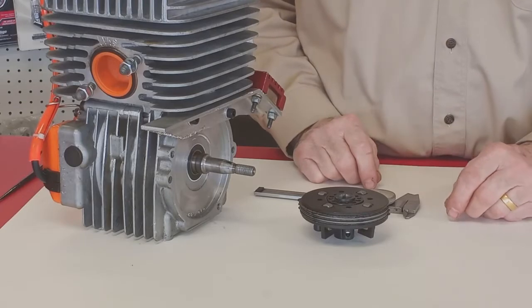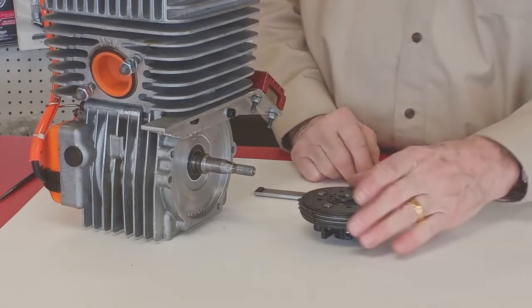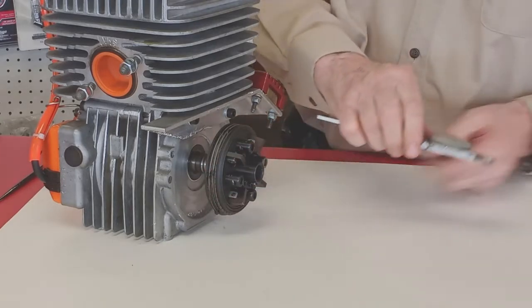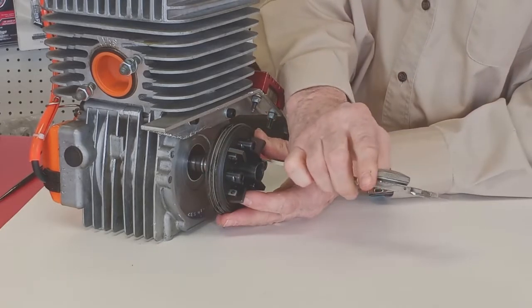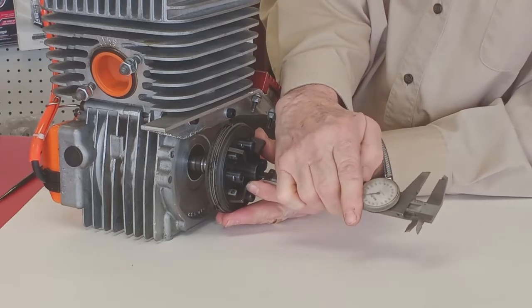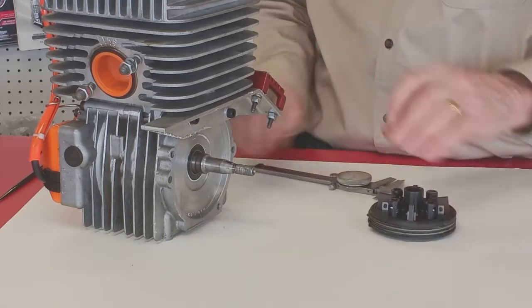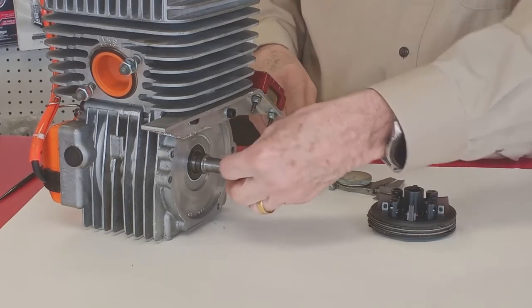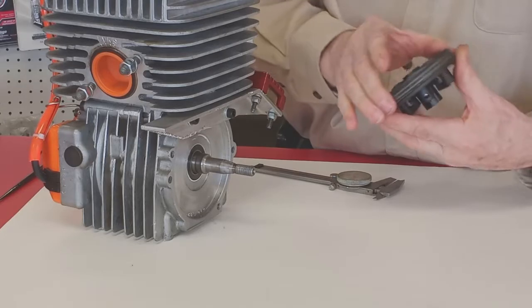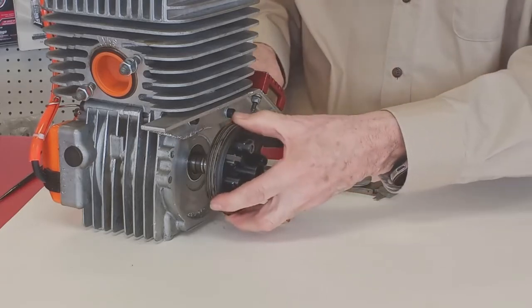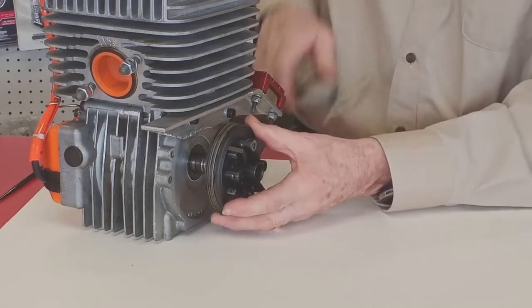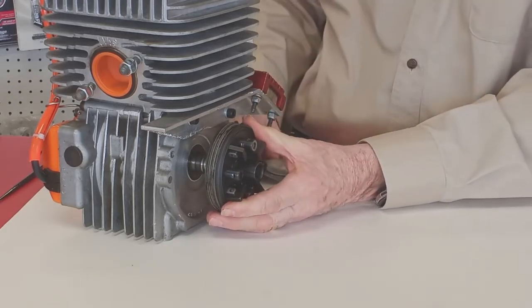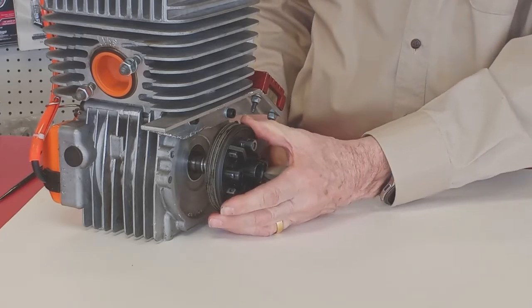One way to check if the key is properly fitted is to install the clutch without the key, measure the distance from the end of the crankshaft, then install the key, and reinstall the clutch, and measure again. The distance should be the same if the key is properly filed.